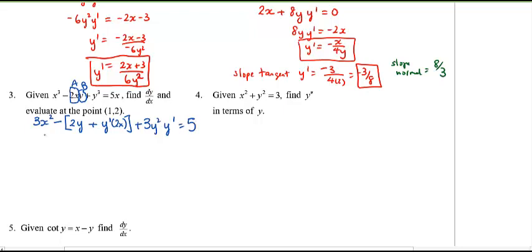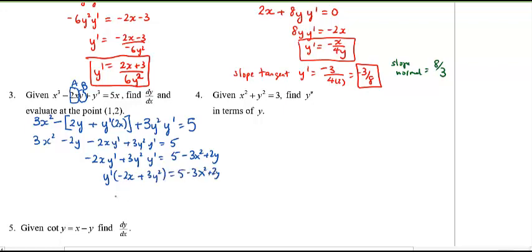Now I'm going to distribute the negative, and then I'm going to collect all the terms with y prime on one side. Lovely algebra. 5 minus 3x squared plus 2y. And then I can solve for y prime by factoring out the y prime and then dividing the remaining factor onto the right-hand side. Look at this.